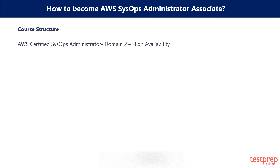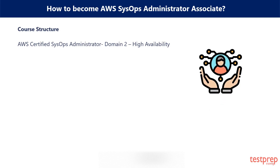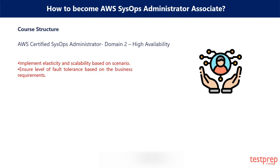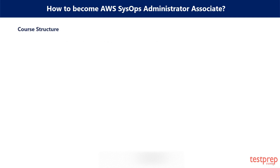Domain 2: High Availability. This domain covers 8% of the exam weightage. You will learn the following in this domain: first, implement elasticity and scalability based on scenario; second, ensure level of fault tolerance based on business requirements.